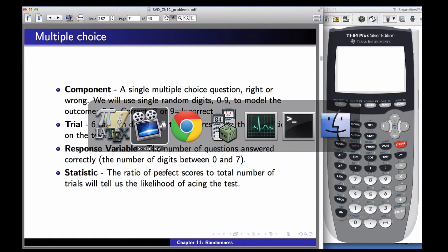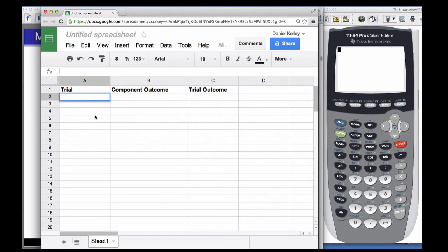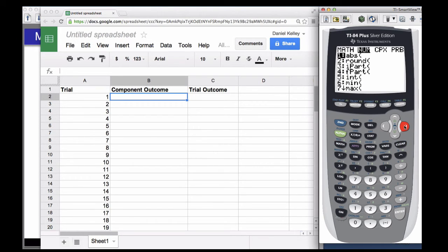So here's what this is going to look like. Let me set this up real quick. Okay, now I want to generate random numbers on my calculator to do this. You could also use a random number table.